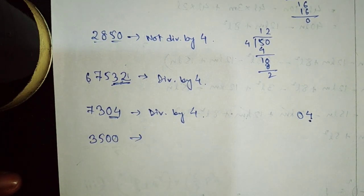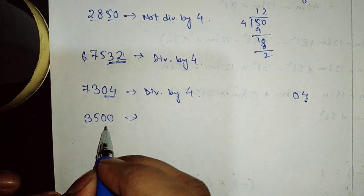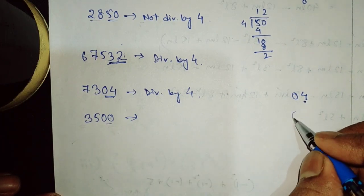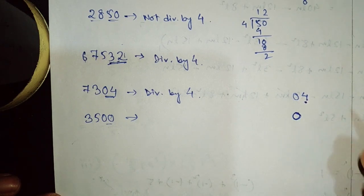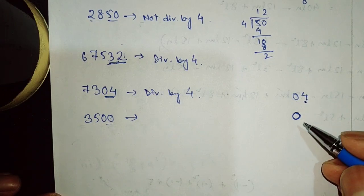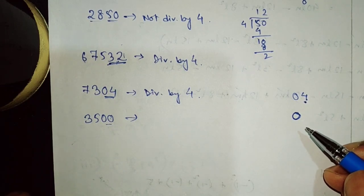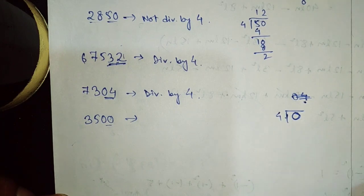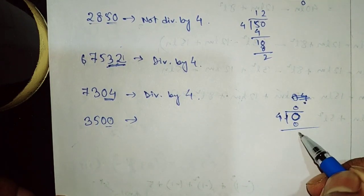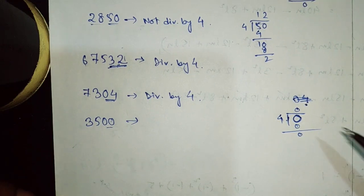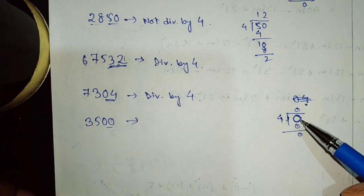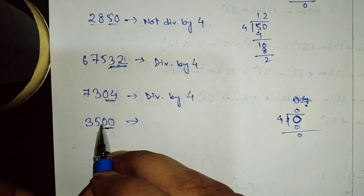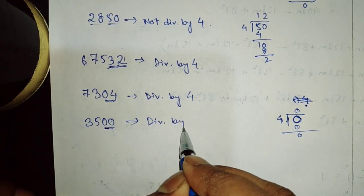Let us see another type of number: 3500. What is the number formed by the last two digits here? It is 00, which is the same as 0. If we divide 0 by any number, the remainder you get is 0 only — 0 is divisible by any number. For example, if we divide 0 by 4: 4 times 0 is 0, remainder is 0. So if we have two zeros at the end, that number is still divisible by 4.